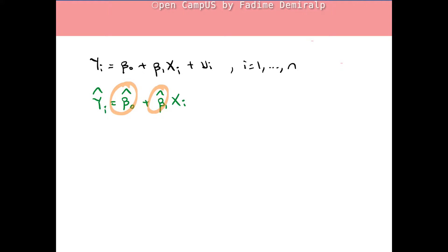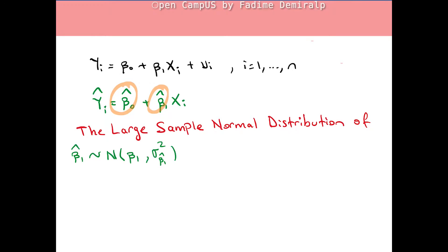In this video we will talk about large-sample distributions of β₀-hat and β₁-hat under the least squares assumptions. In large samples, OLS estimators β₀-hat and β₁-hat have a joint normal sampling distribution. The large-sample normal distribution of β₁-hat and the large-sample normal distribution of β₀-hat are given as follows.